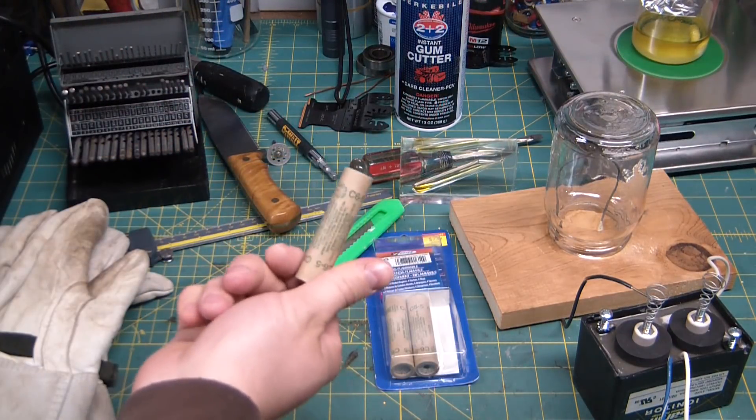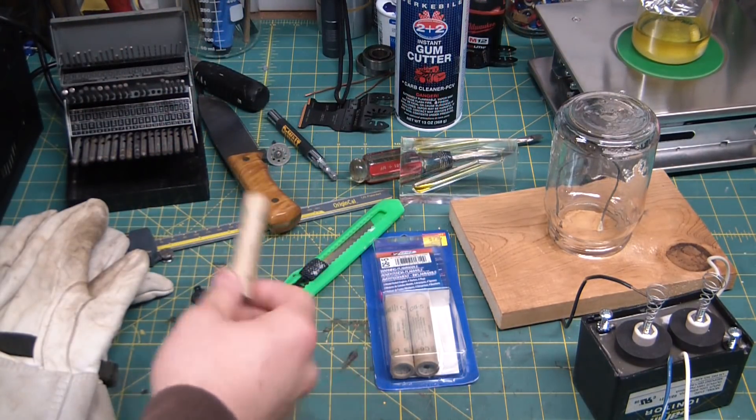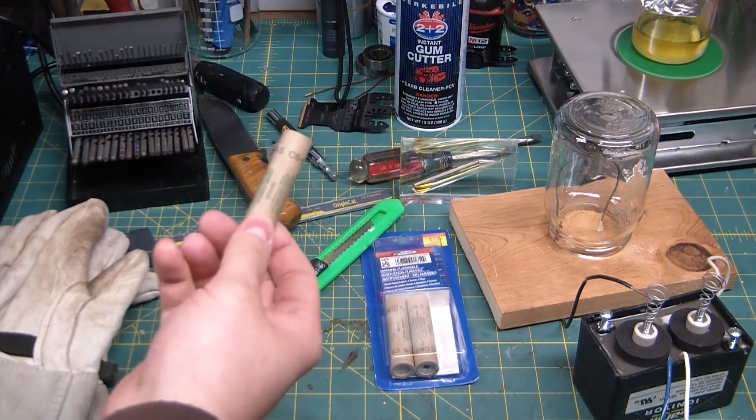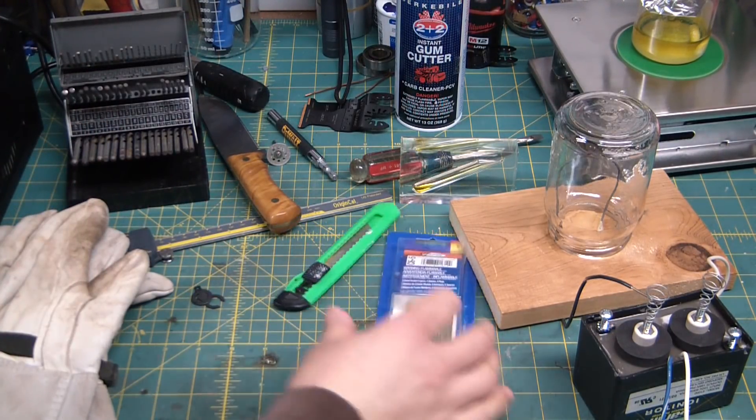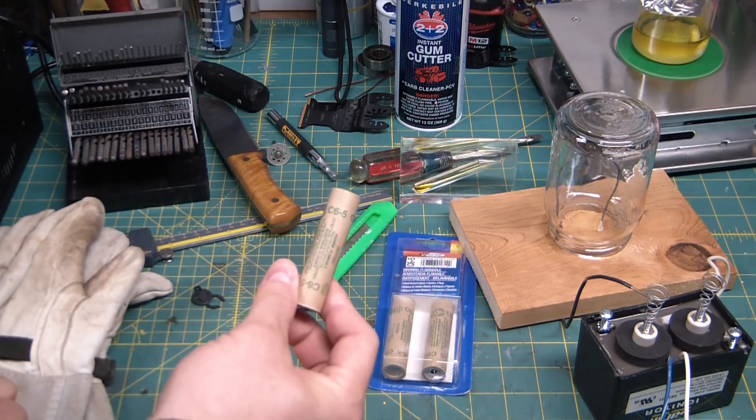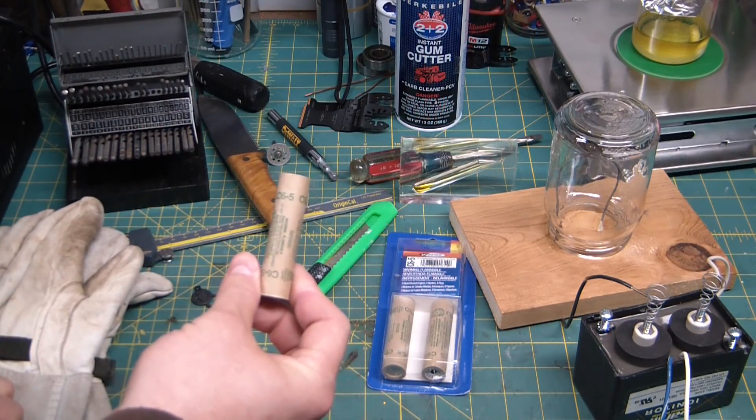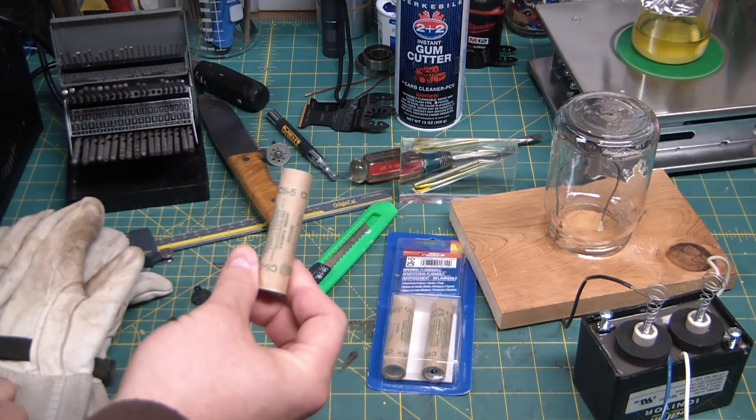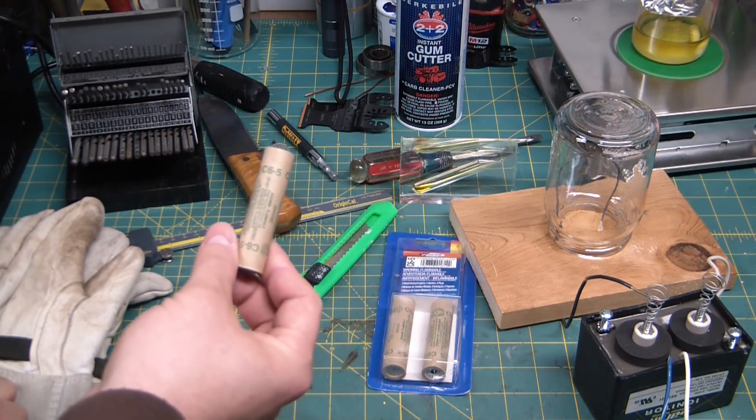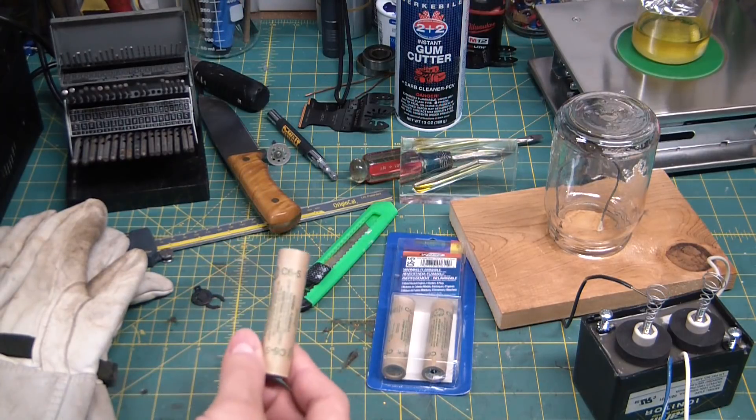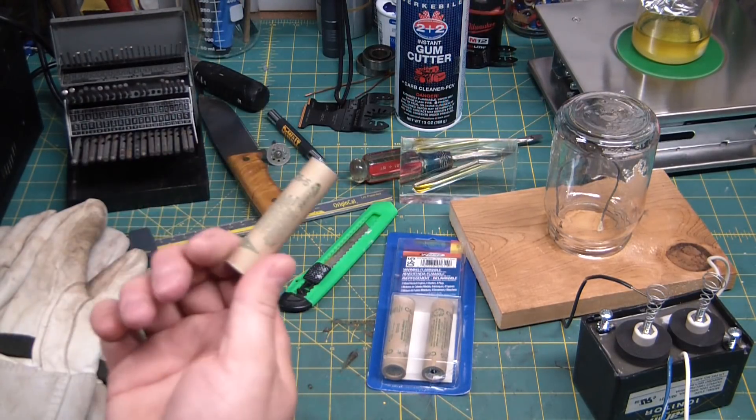Finally freed from its packaging we have a C6-5 motor. I forget exactly what that means. I think C is like the total impulse, six I believe is the burn duration, and five is the ejection delay, if I'm remembering correctly. It's been a long time since I messed with these.